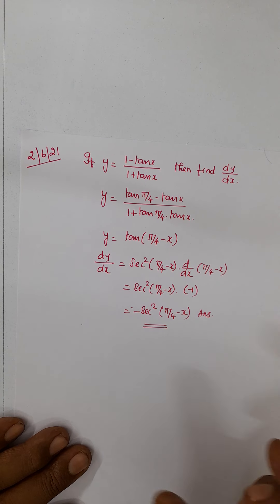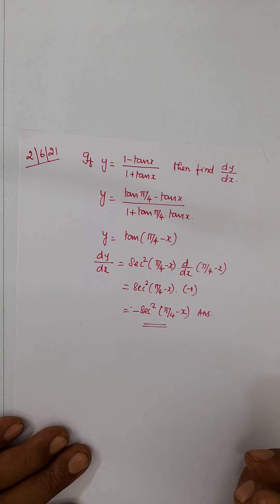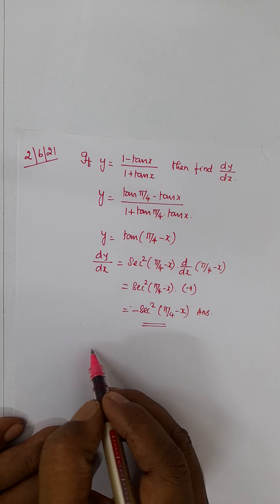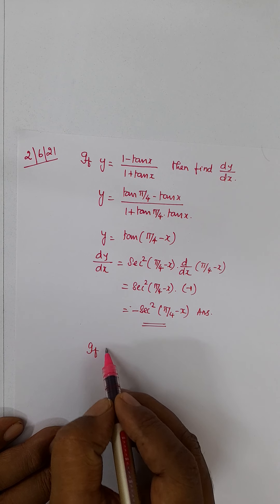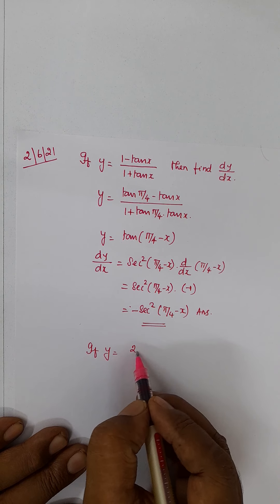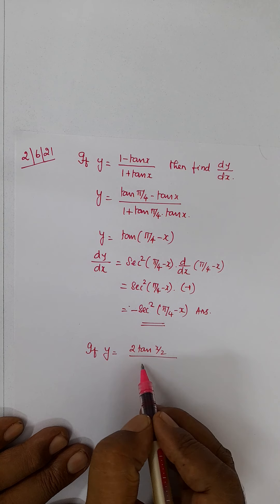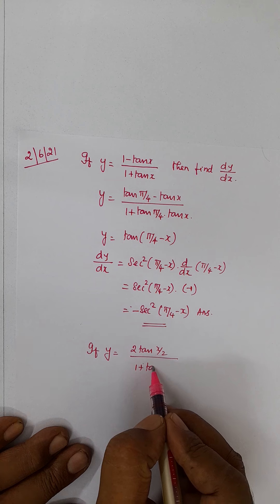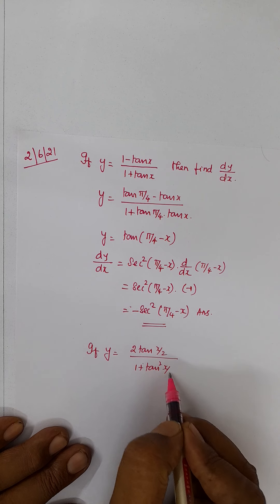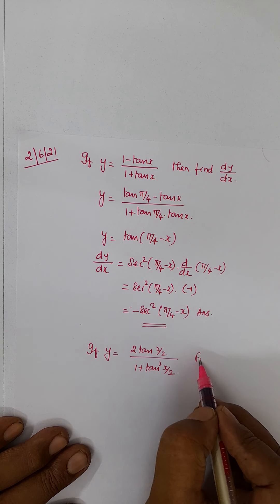By using the same method, you can go for another sum. If y is equal to 2 tan x by 2 divided by 1 plus tan square x by 2, find dy by dx.